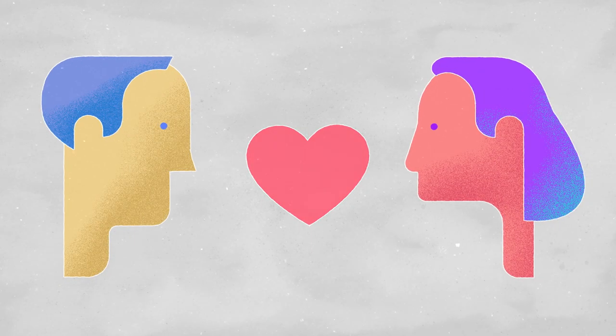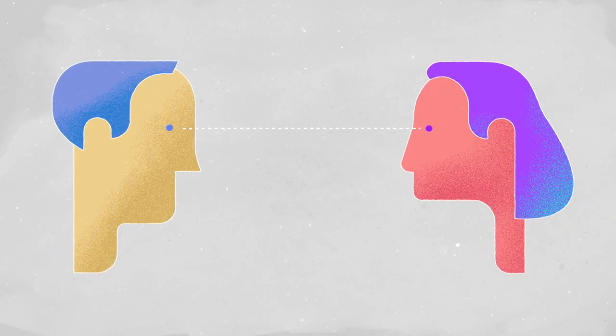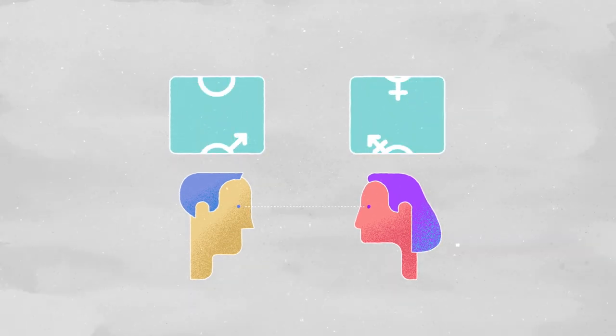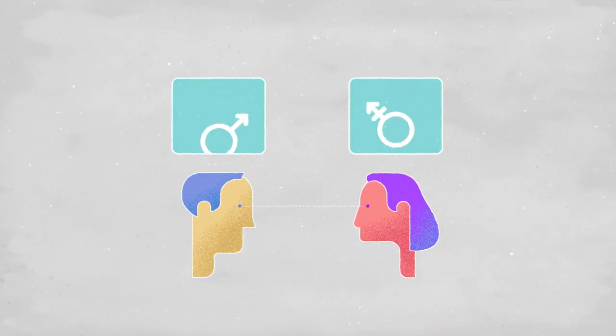Sexual orientation is the ability of each person to feel emotional, affective, and sexual attraction to people of a gender different from their own gender, or to more than one gender, as well as the ability to maintain intimate and sexual relationships with such people.